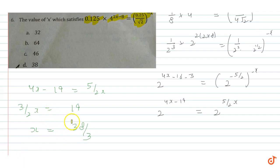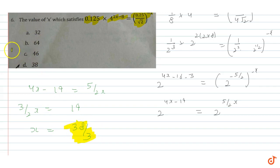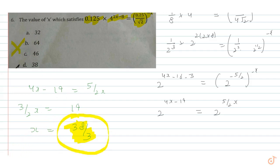The value of x that satisfies this equation is 38 by 3. Looking at the four options given — 32, 64, 46, 38 — all are wrong. The correct answer is 38 by 3. So the value of x is 38 by 3.